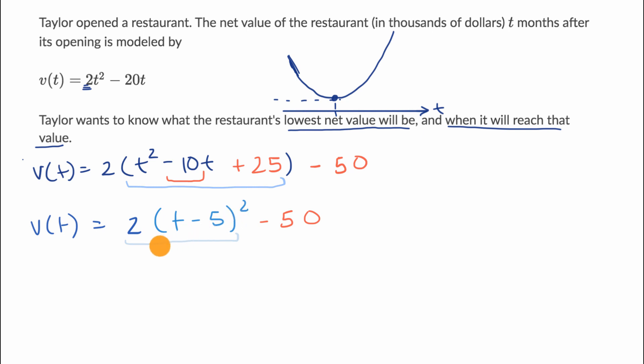This part is going to equal zero when t = 5. So the lowest value is when t = 5. Let me do that in a different color.